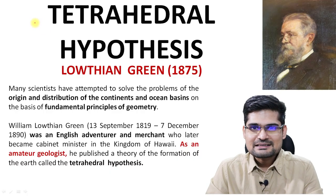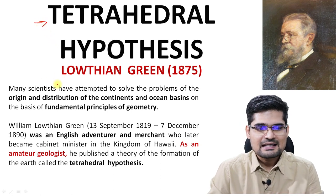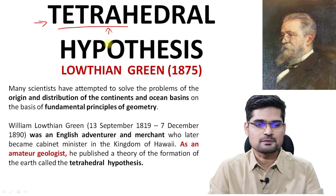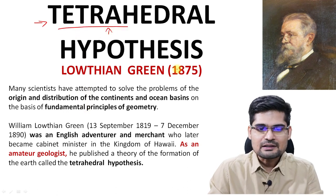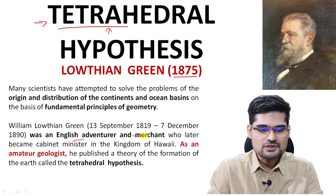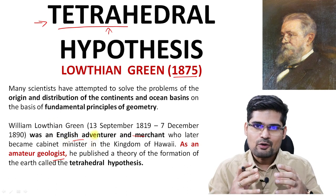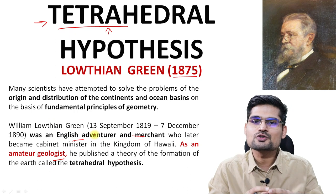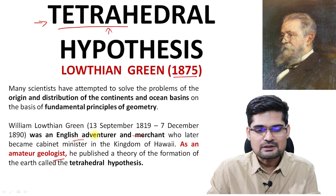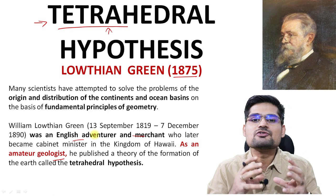Now, what is the tetrahedral hypothesis? It is basically one of the hypotheses linked with geometrical principles. Lothian Green in 1875 was one of the first persons — an English adventurer, merchant, and geologist — who thought about how to explain the distribution of continents and oceans on the earth's surface. He proposed this tetrahedral hypothesis according to the best knowledge that he had, based on geometric principles.